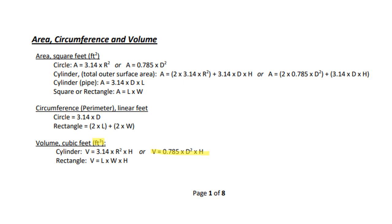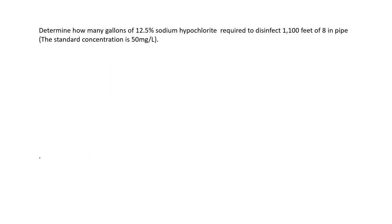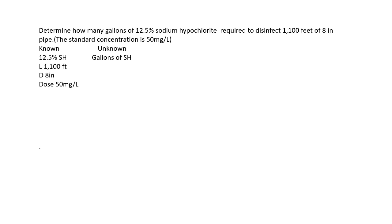Question number one: determine how many gallons of 12.5% sodium hypochlorite are required to disinfect 1,100 feet of 8-inch pipe to the standard concentration of 50 milligrams per liter. Pulling out knowns and unknowns: we know we have a 12.5% sodium hypochlorite solution, the pipe length is 1,100 feet, it has an 8-inch diameter, and the dose is 50 milligrams per liter.